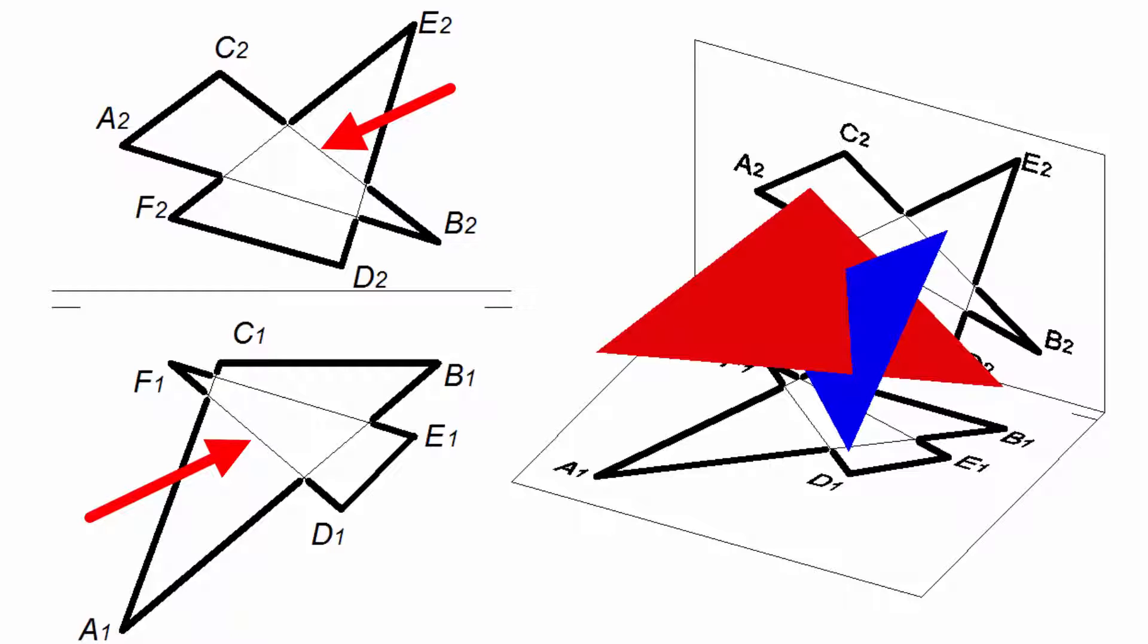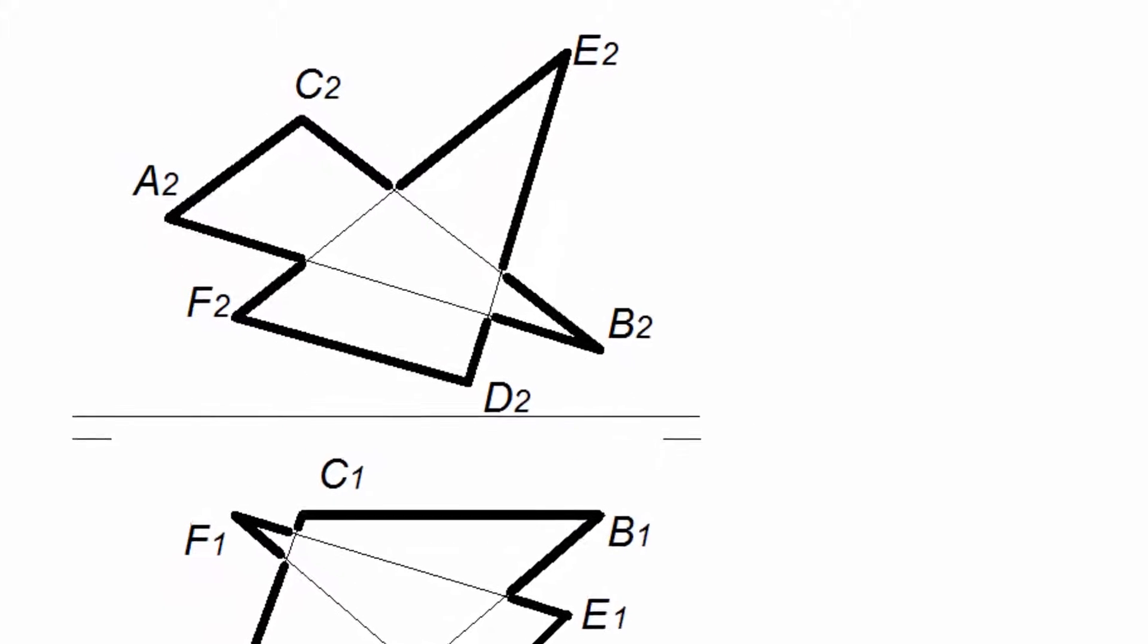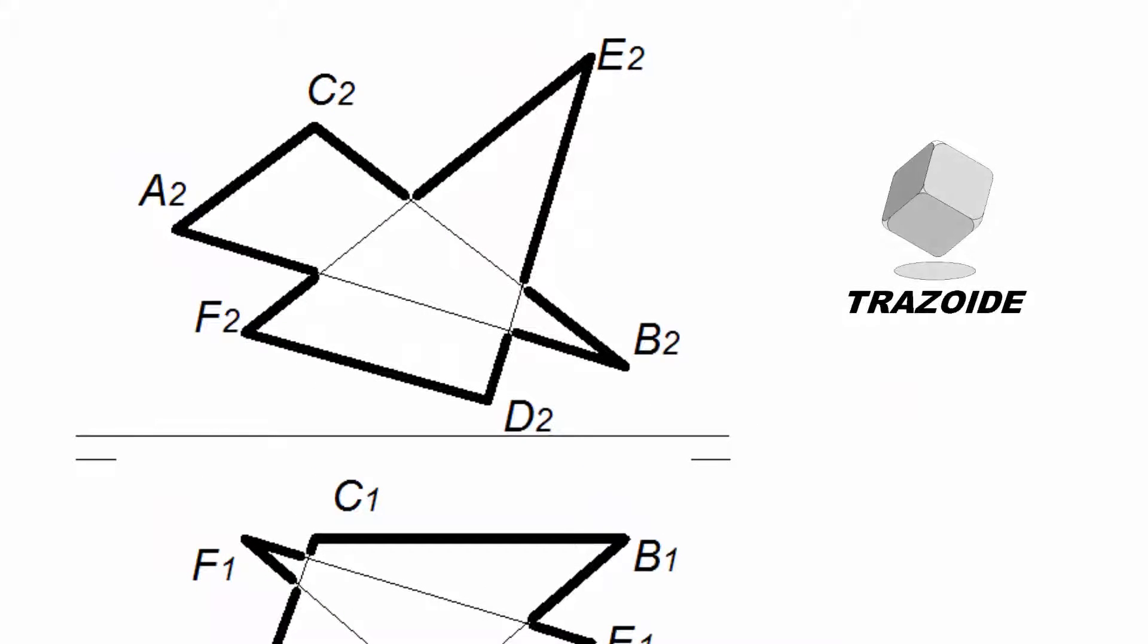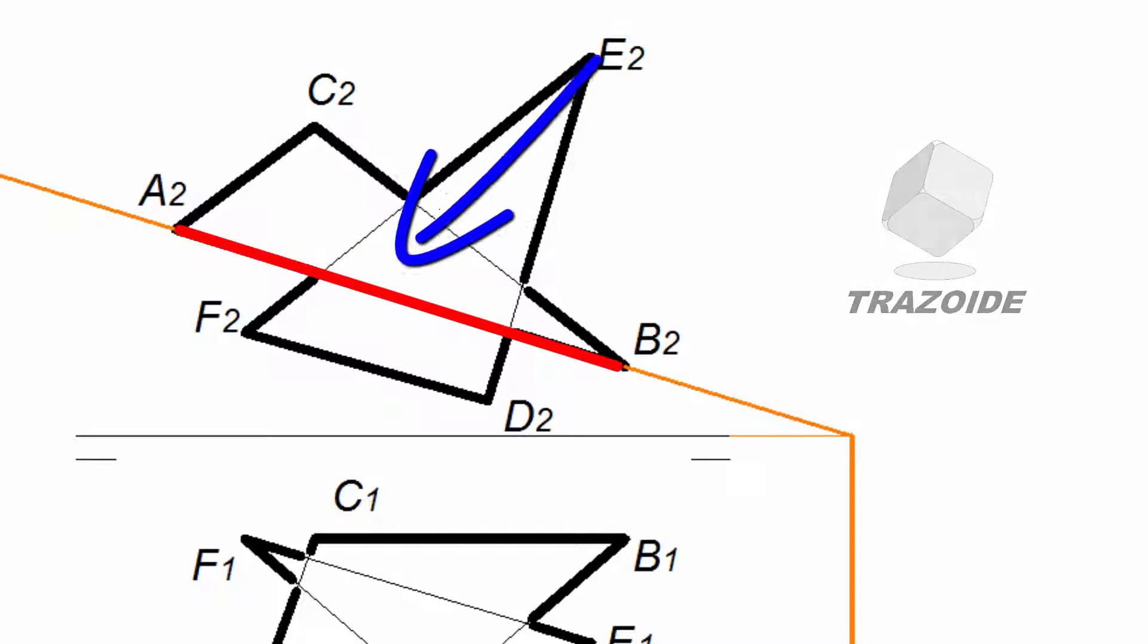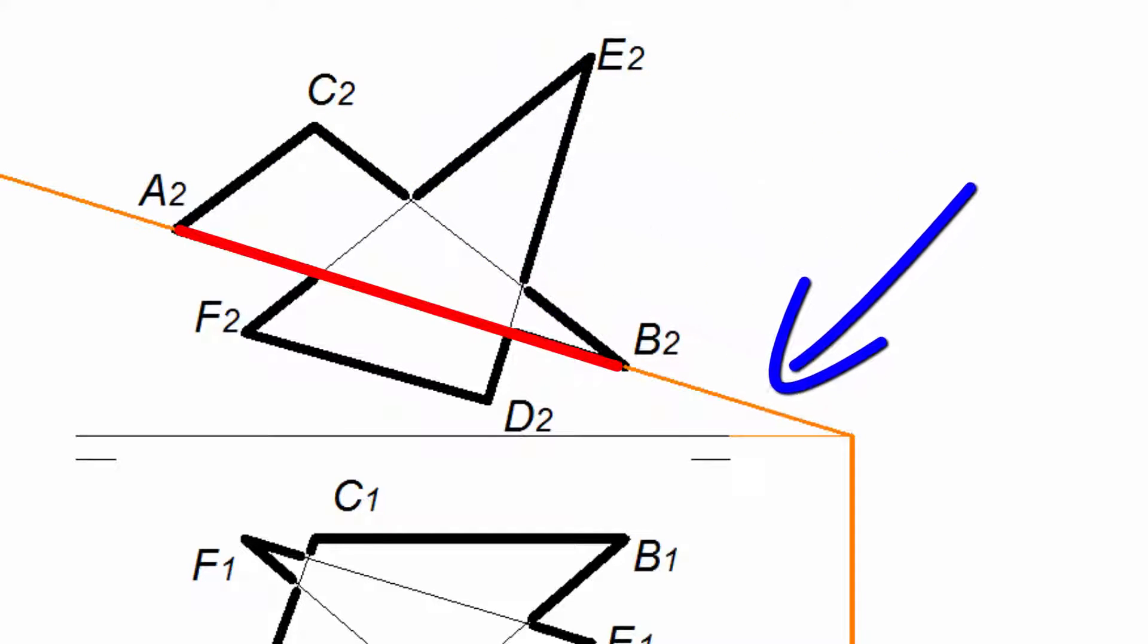To find the intersection we will build a vertical projecting plane containing an edge. We started with the AB edge. A2B2 vertical projection is the vertical trace of the plane and where it touches the ground line will be perpendicular horizontal trace.